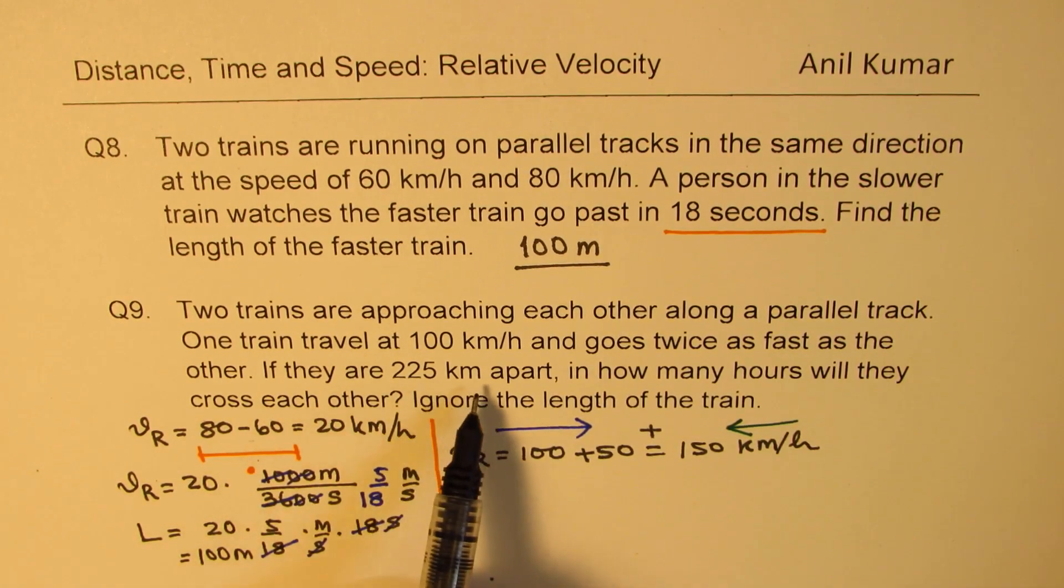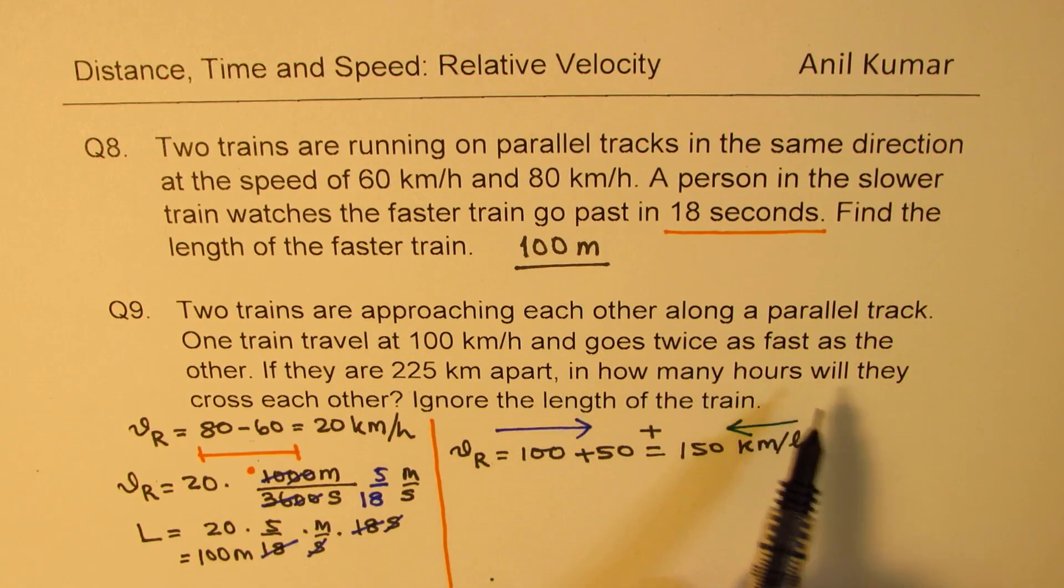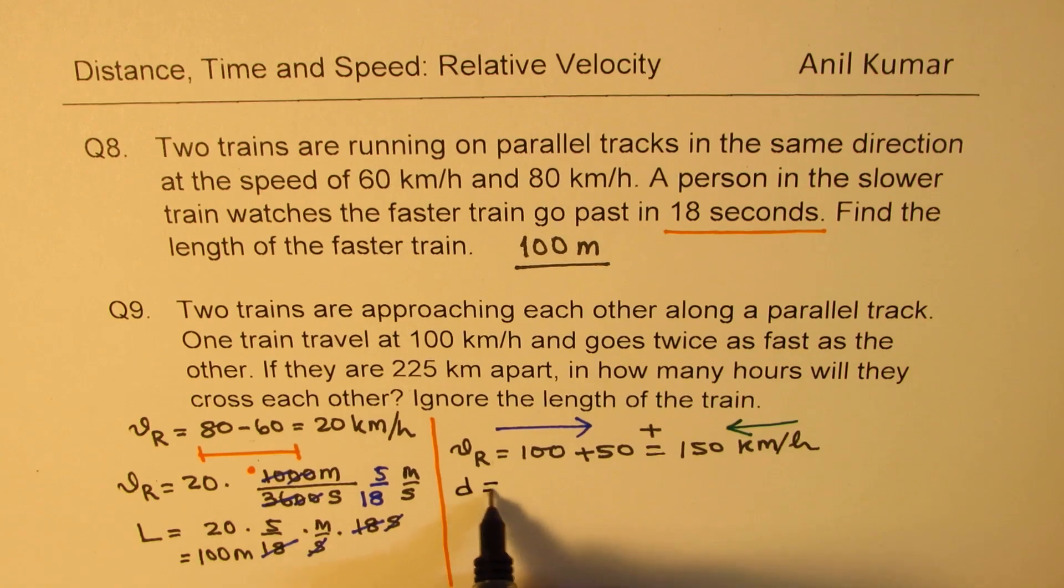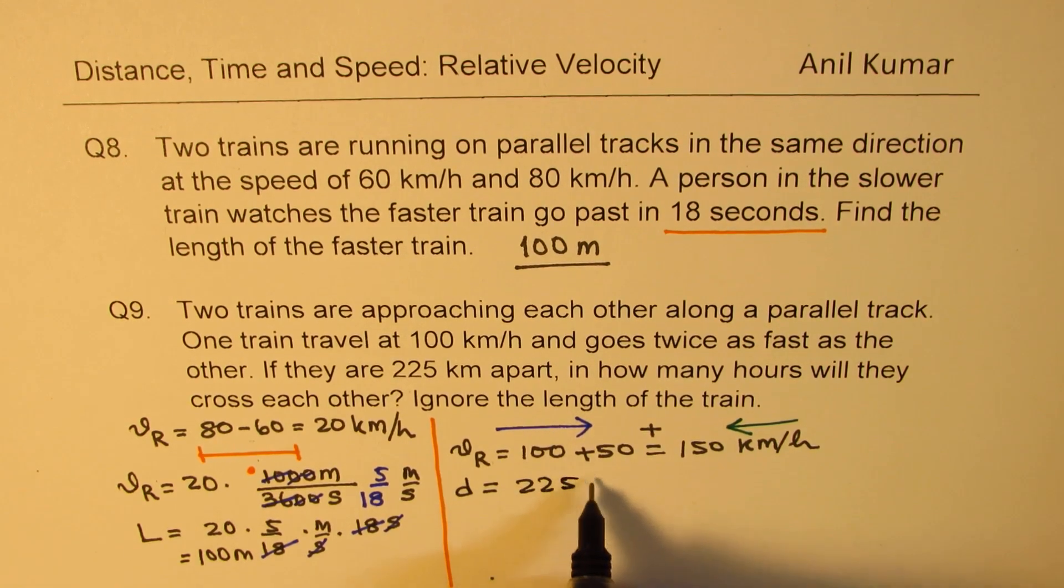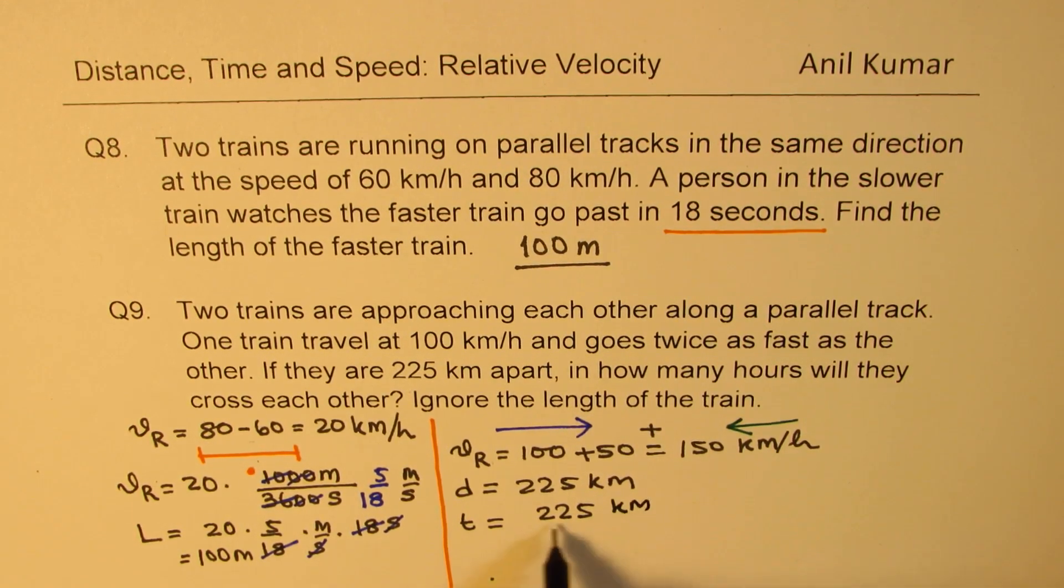If they are 125 kilometers apart, in how many hours will they cross each other? Well, that's simple. The distance is given to us as 225 kilometers, and time will be the ratio of this. So 225 kilometers divided by 150 kilometers per hour gives us time in hours.